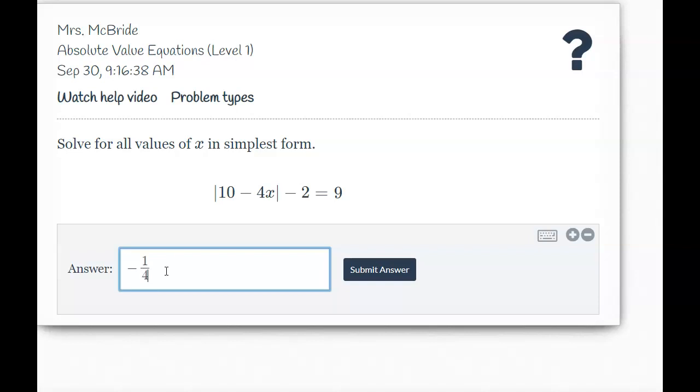So I plug in that answer, but then I have to also go in and check the 21 fourths. So I get 10 minus 4 times 21 fourths. So again, the 4s cancel. 10 minus 21 gives negative 11, but the absolute value of negative 11 is 11. So we do, in fact, get 9 equals 9 because 11 minus 2.